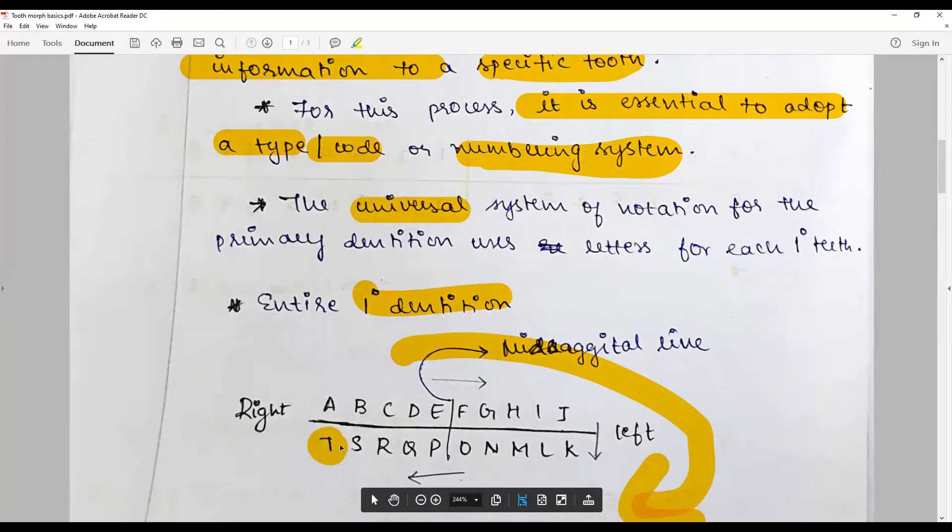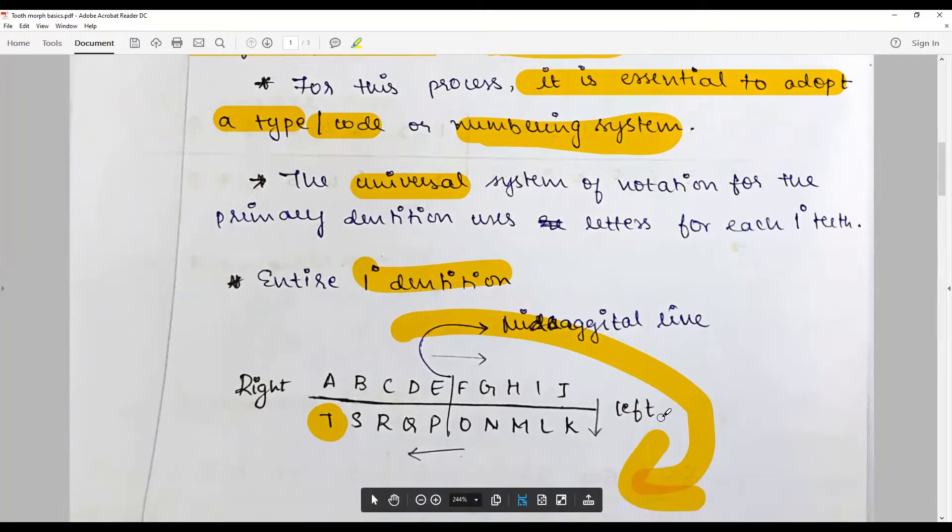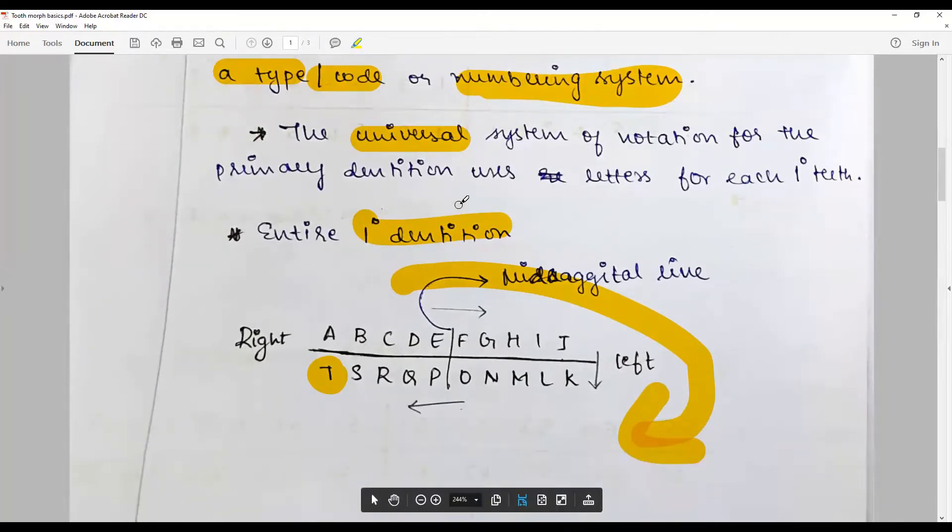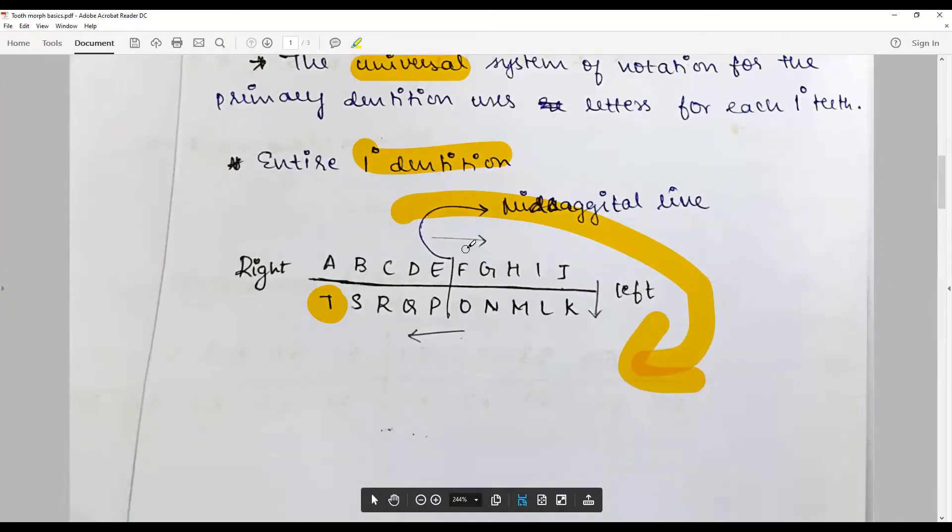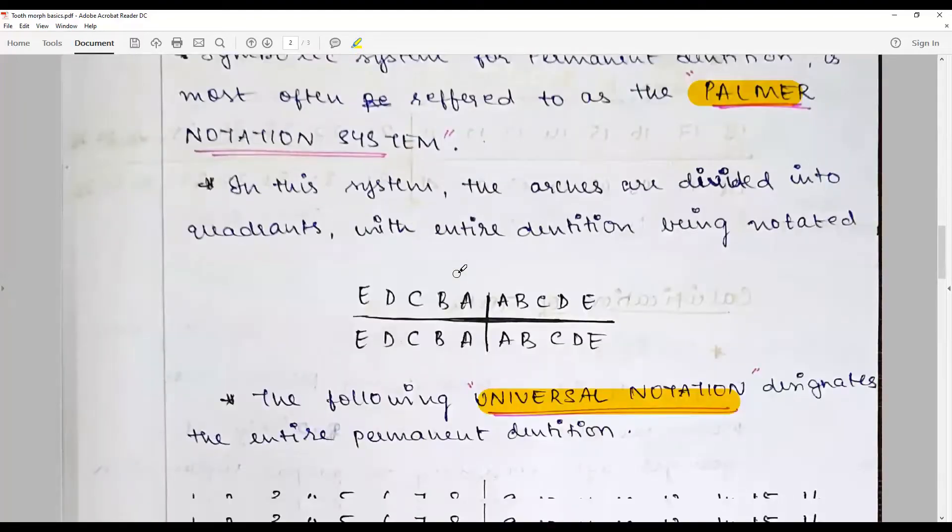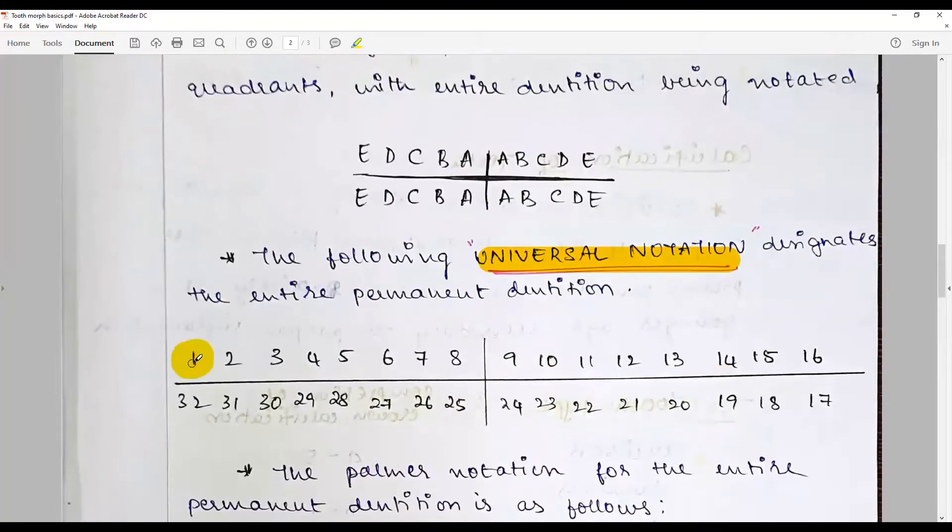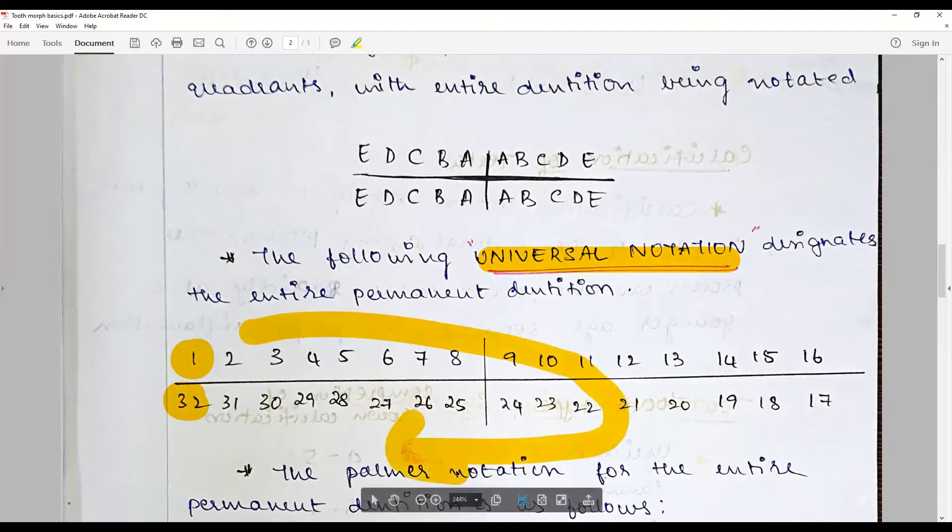This is the universal naming system. The universal naming system for permanent dentition begins with 1 at the maxillary right third molar to 32 in the mandibular right third molar. It goes in a clockwise direction.